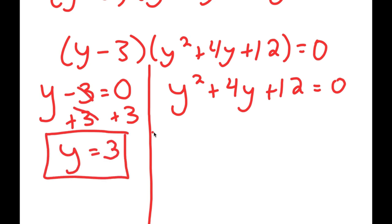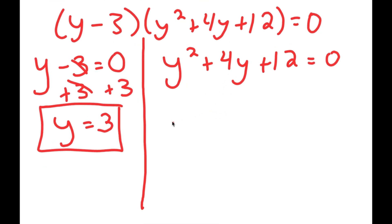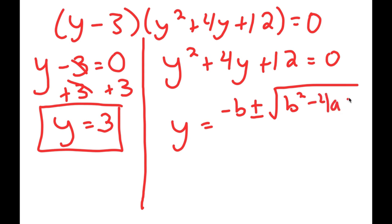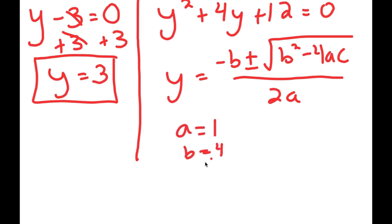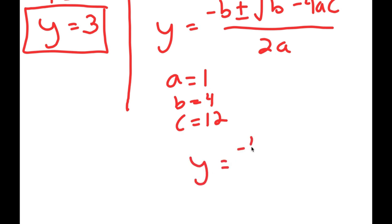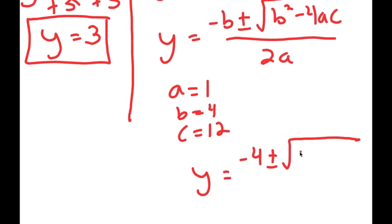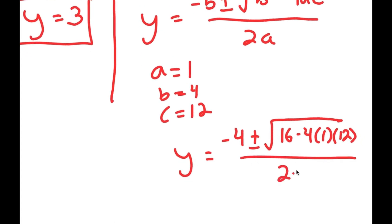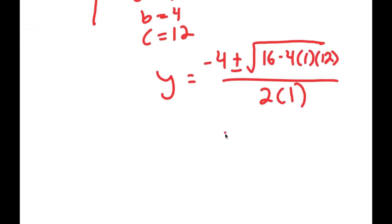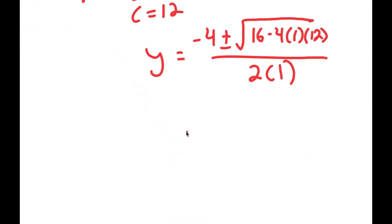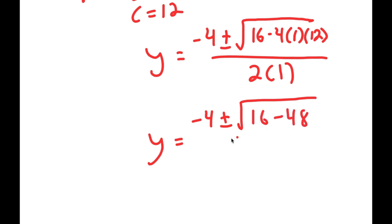For the second factor, y squared plus 4y plus 12 equals 0. Since it's a quadratic equation, I can use the quadratic formula: negative b plus or minus the square root of b squared minus 4ac, all over 2a. In this case, a is 1, b is 4, and c is 12. So I get y equals negative 4 plus or minus the square root of 4 squared, which is 16, minus 4 times 1 times 12, all over 2.